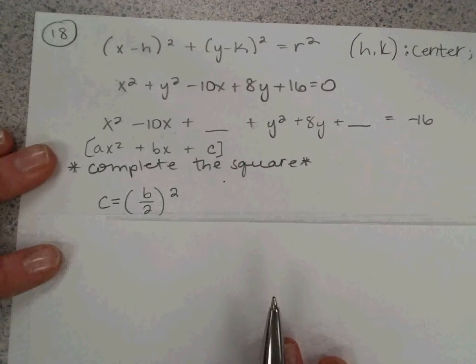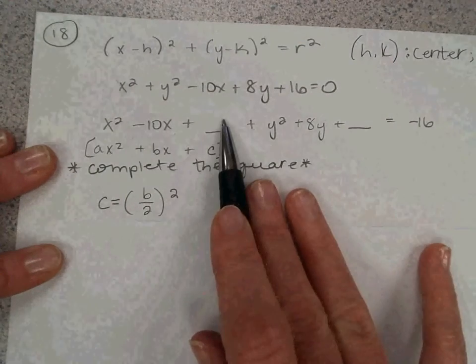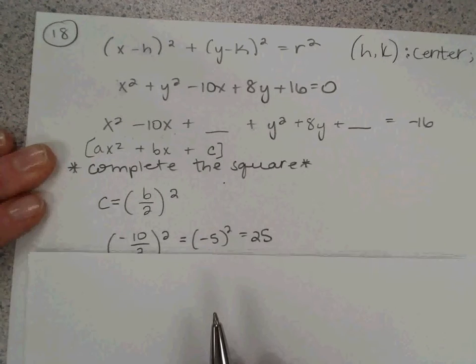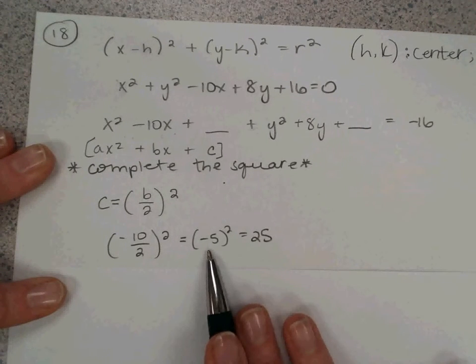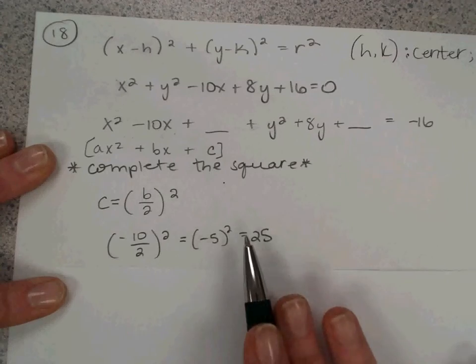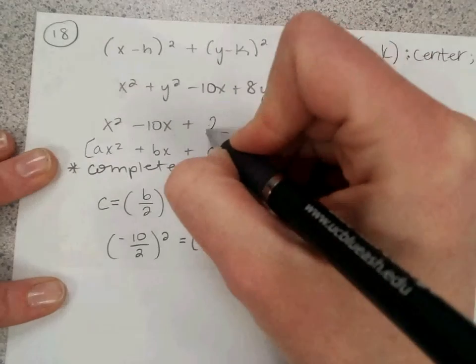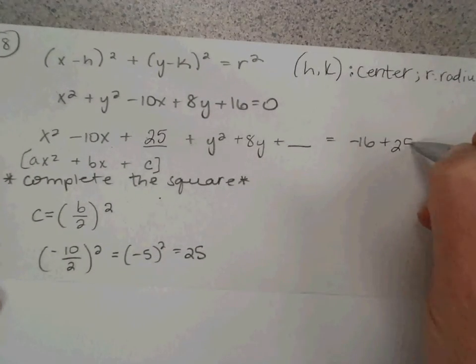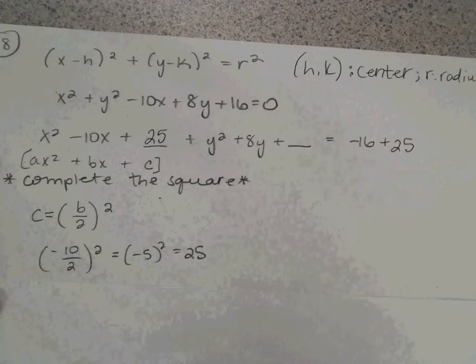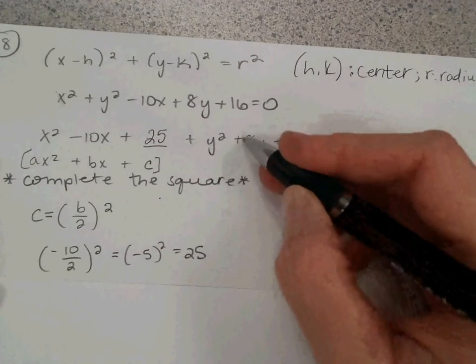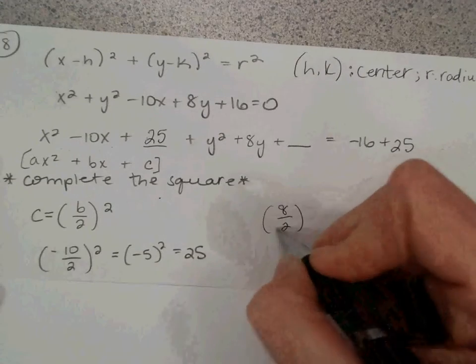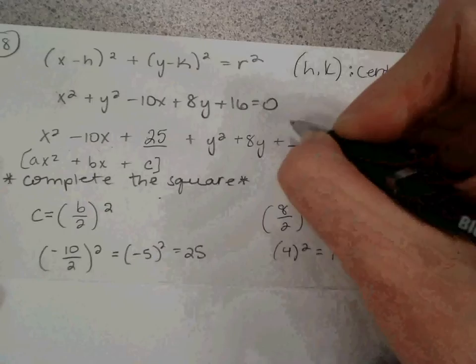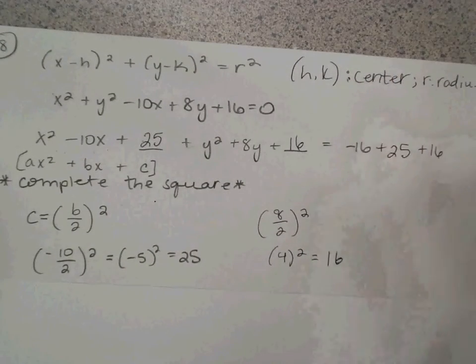You can look up a Khan Academy video if you want to see more about that. To find out what goes here, I take the b value, divide it by 2, and square it. So in this case, I divided it by 2, and I got negative 5. Squared is 25. So I'm going to put that 25 here. Now, if I add a 25, I have to add it to the other side to keep it balanced. This is an equation. I'll do the same thing with the y values. I'm going to take the 8, divide it by 2, and square that, giving me 4 squared, which equals 16. I'm going to add a 16 here, so I have to add a 16 here.